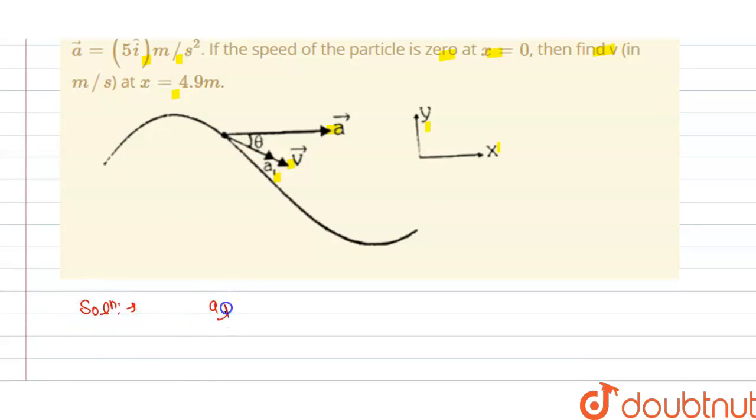We know that tangential acceleration equals the rate of change of velocity with respect to time, so we can multiply and divide by dx. We can write this as dv/dx multiplied by dx/dt.